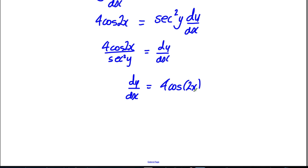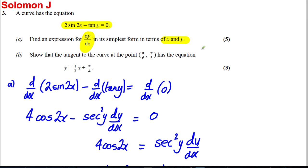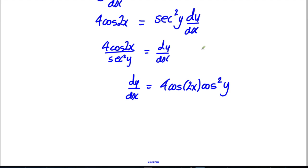Okay the next, we have to show that the tangent to the curve at π/6, π/3 has the following equation. So what we're going to do for part B, we're going to firstly work out dy by dx when x is equal to π/6 and y is equal to π/3.